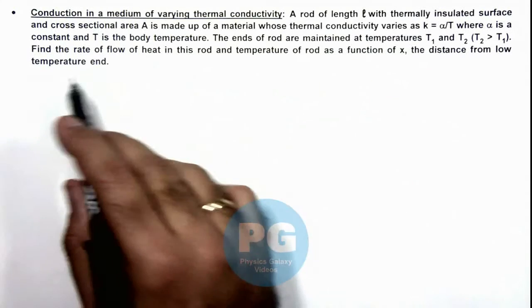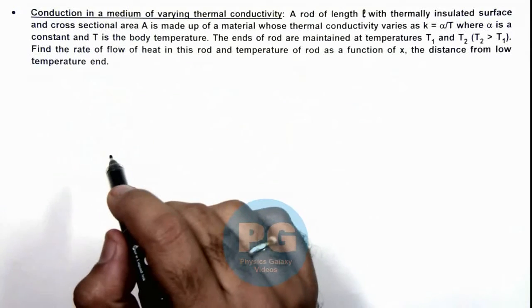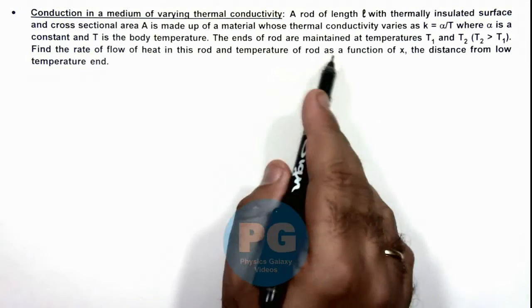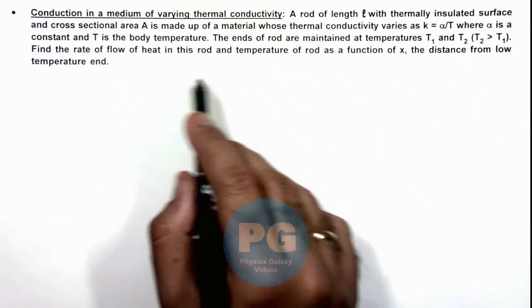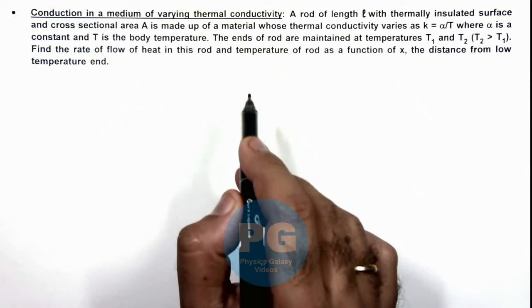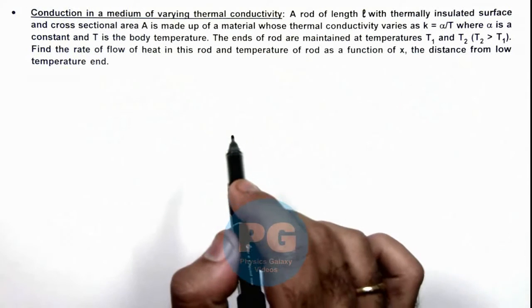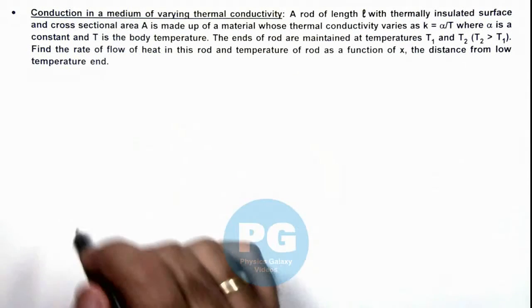Where alpha is a constant and T is the body temperature. The ends of rod are maintained at temperature T1 and T2. We are required to find the rate of heat flow in this rod and temperature of rod as a function of x, the distance from low temperature end.